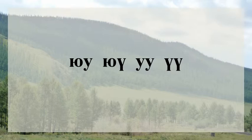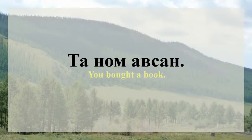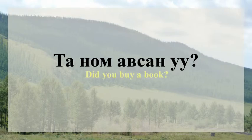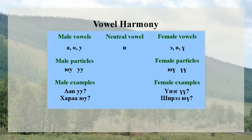For example, using the previous sentence 'Ta nom avsang,' to turn the statement into a question we just add one of those four particles. Because 'avsang' contains the male vowel 'a' and ends in a consonant, we use the particle 'o': 'Ta nom avsang o?' Which question particle to use depends on the vowels in the last word of the sentence. Each particle is matched with its respective male and female vowels. This is a pattern that is present everywhere in Mongolian.